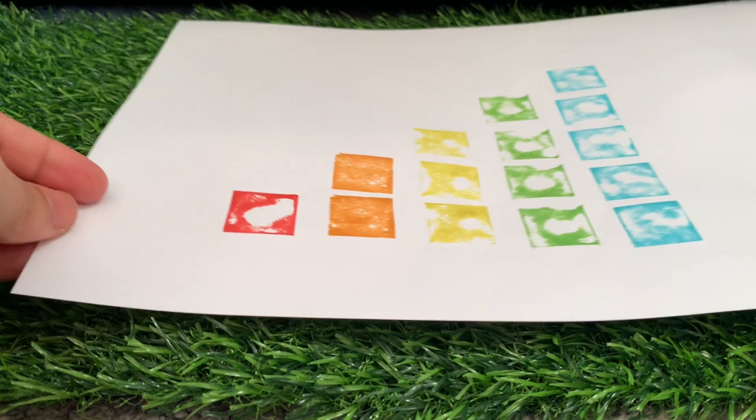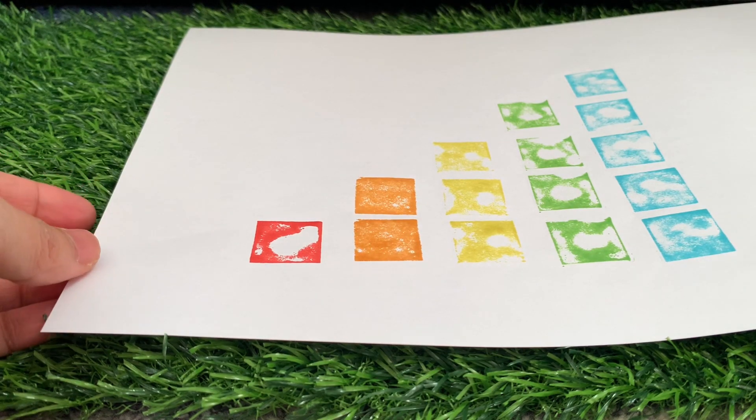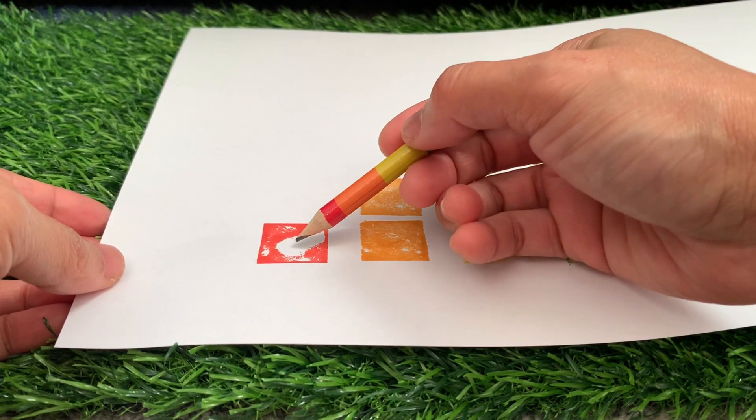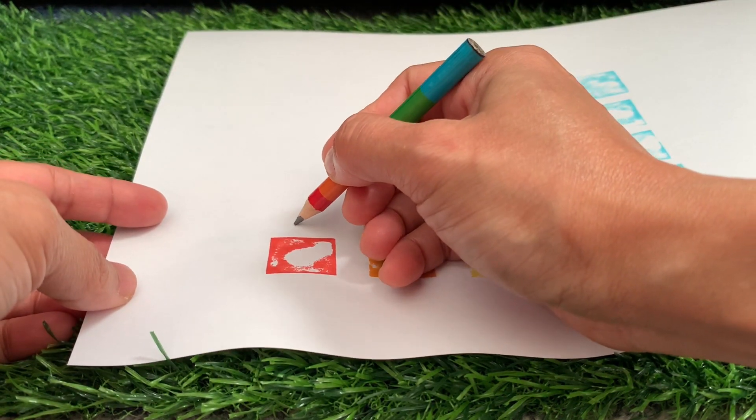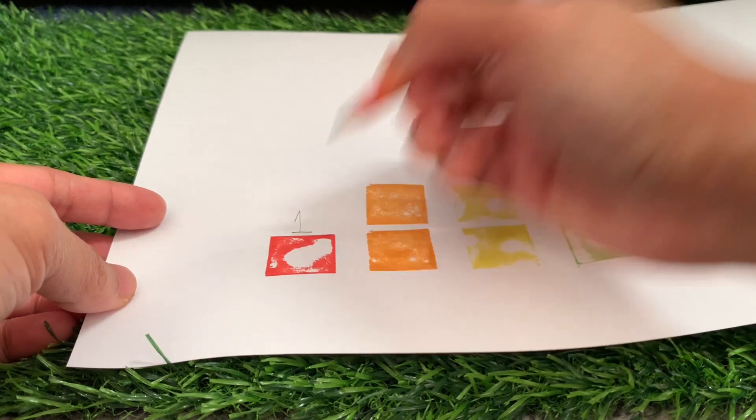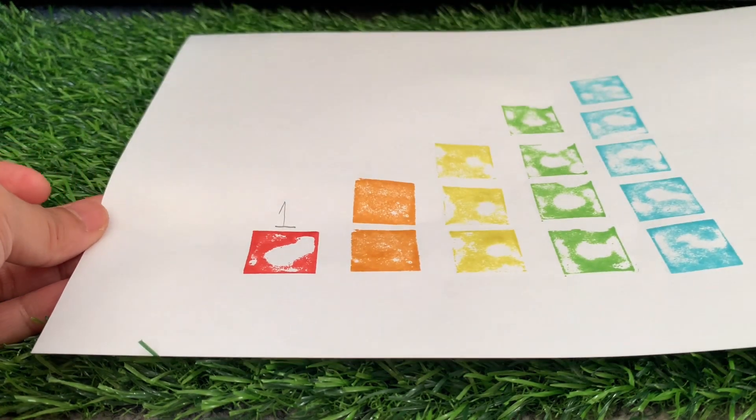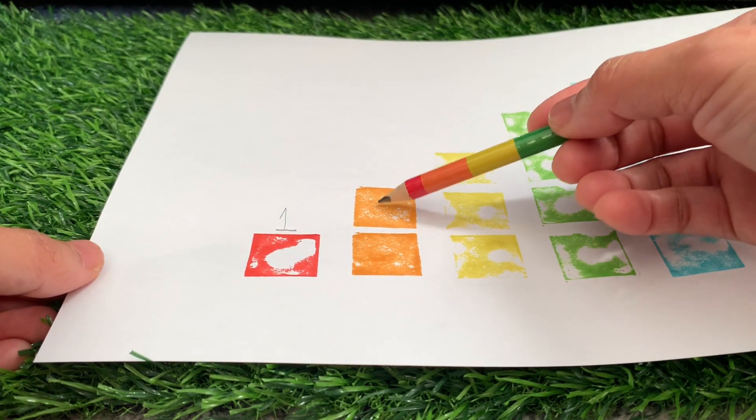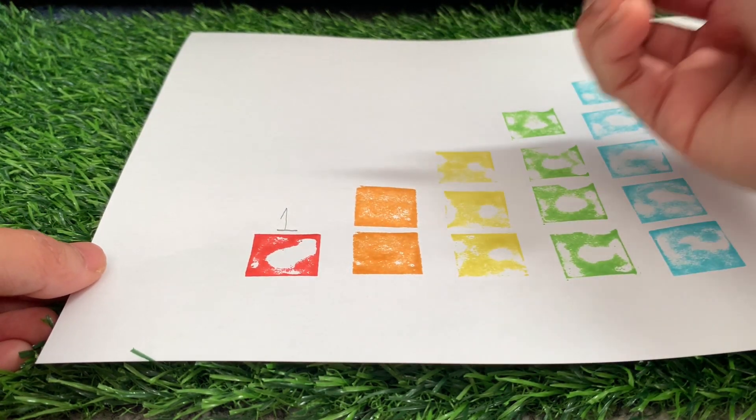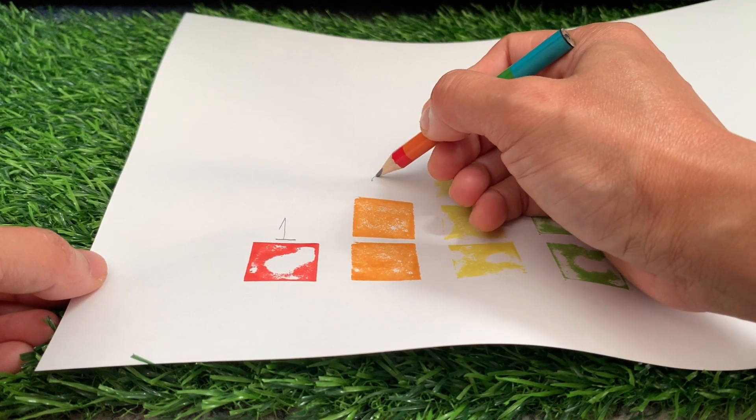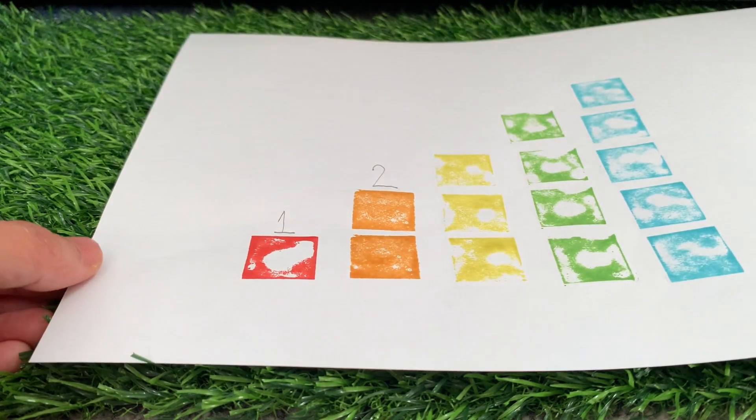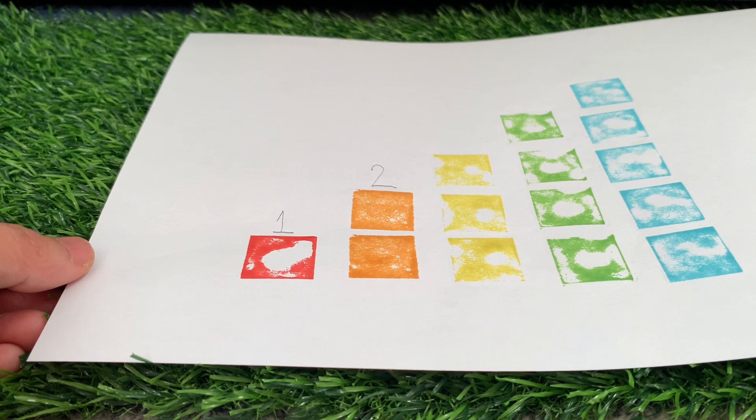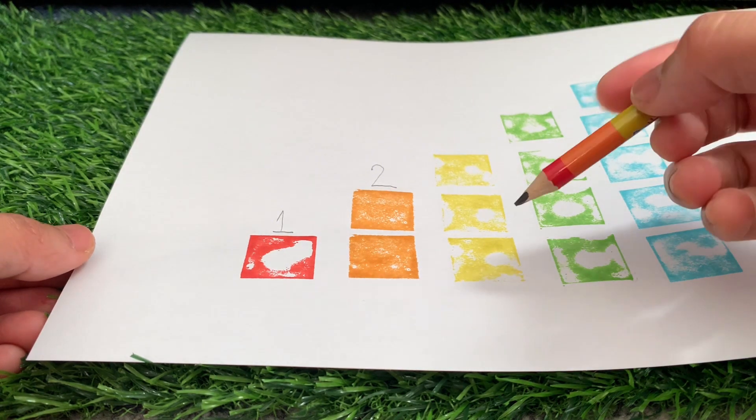And now join me and count it again. Let's write the numbers. One, and there's the number one. Next, number two. One and two. Let's write it. Number two. Next, the yellow number blocks three.